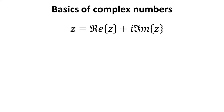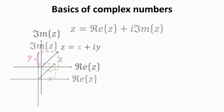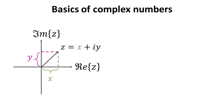First, some very basic stuff about complex numbers, which you can skip if you want. Recall that any complex number Z can always be written as the sum of its real and imaginary parts, which are each real numbers. This representation is called the rectangular form. We can represent the complex number Z as a two-dimensional vector, with its real and imaginary parts represented by the real and imaginary axes. Due to this relation with two-dimensional vectors, the real and imaginary components are also called X and Y.